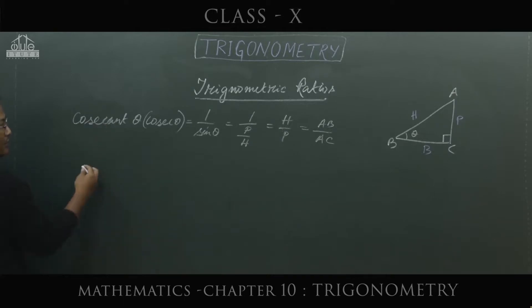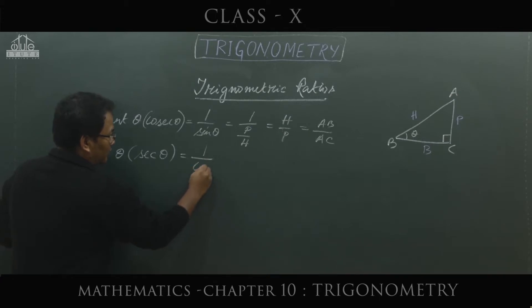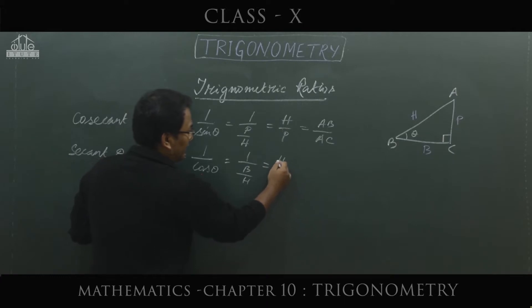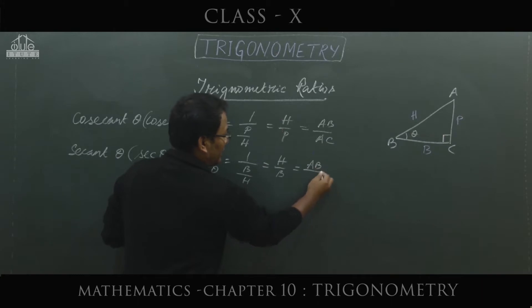The second trigonometric ratio related to inverse is secant theta, written in short as sec θ. This will be the inverse of cos theta. You remember cos theta is base by hypotenuse. When the denominator comes up, it becomes hypotenuse by base. According to the figure, hypotenuse is AB and base is BC.